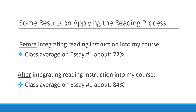Here are some quick results from applying the reading process in my own class. Prior to integrating explicit reading instruction, the class average on my students' first essay was around 72% — barely passing. After integrating reading instruction, the class average on that same first essay, with the same text and same instructions, jumped to around 84%. I was so pleased because I could see my students summarizing accurately, paraphrasing accurately, and really responding to the main points of an article in truly thoughtful ways. The reading instruction has had a huge payoff in my students' learning.